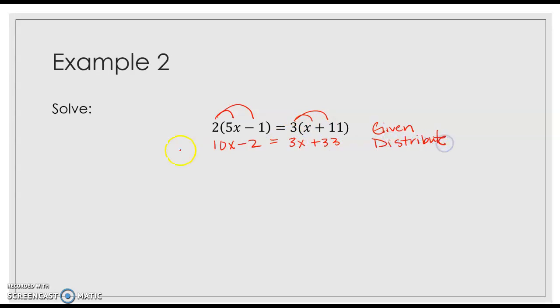From here, do I have same side like terms? And so, I'm going to give myself my little border. And over here, I have 1x and 1 constant. And over here, I have 1x and 1 constant. So, no same side like terms. So, that means no combining like terms for this one. But, I do have variables on both sides. So, my 3x is smaller than 10x. So, I'm going to subtract 3x from both sides. So, I'm using subtraction property of equality here. And so, that's going to give me 7x minus 2 equals 33.